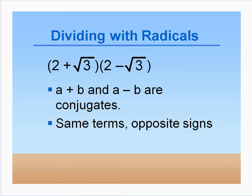We're going to continue dividing with radicals. In the first part of the lesson, we only divided by a single radical in the denominator. Now we're going to have binomials in the denominator, so we'll do a quick review of multiplying with radicals — specifically a rule that's going to be helpful.